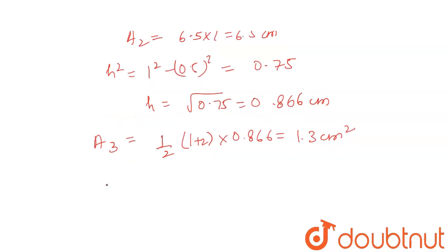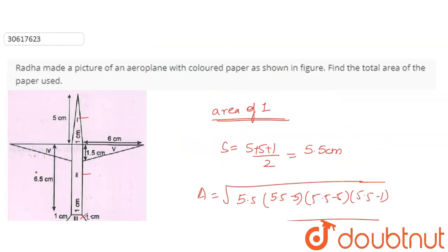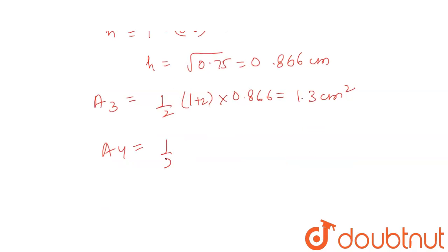Now let's look at the fourth figure. The fourth figure and the fifth figure are the same — they are triangles. This is 6 and this is 1.5. So I just need height and base. Half into base into height: half into 6 into 1.5 gives 4.5 cm².